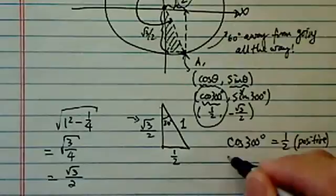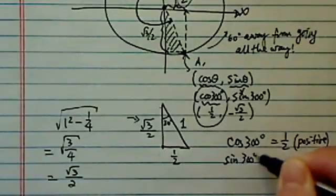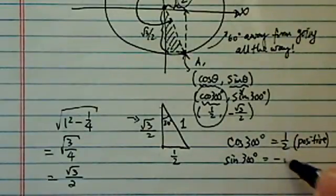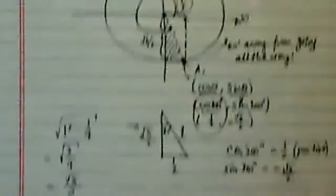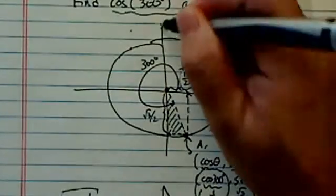And then we have sine of 300 degrees. Since in quadrant 4, it's negative with radical 3 over 2, because the y-value here is negative.